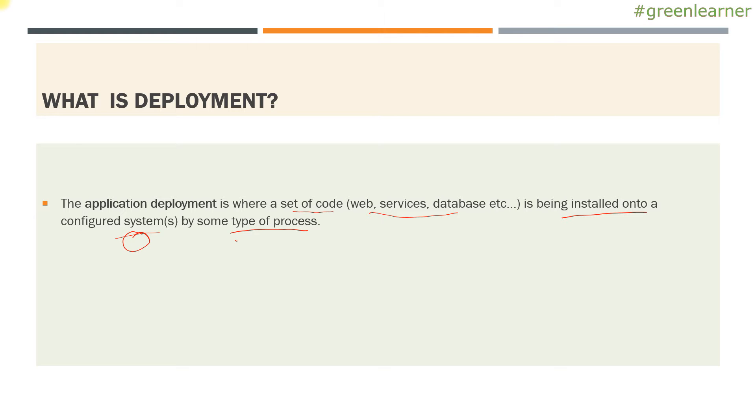After deployment, your application is available over the internet or intranet if it is within the organization and users out there can access your application. This is all about deployment, meaning your server is running, your application is running on some system and users are able to access it.